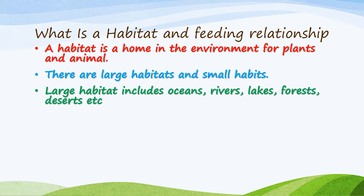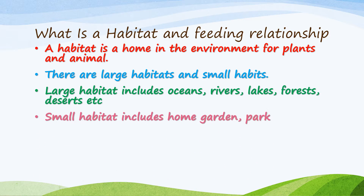There are large habitats and small habitats. Large habitats include oceans, sea areas, rivers, lakes, forests, deserts, and so on. Small habitats include home gardens and parks.